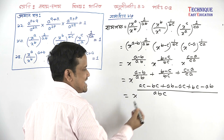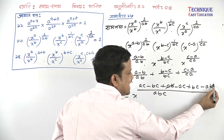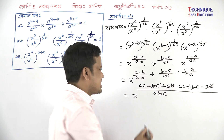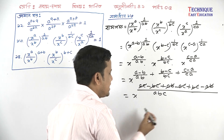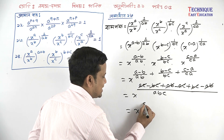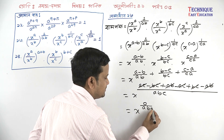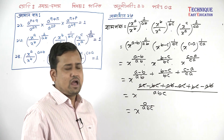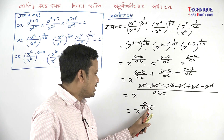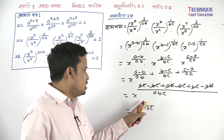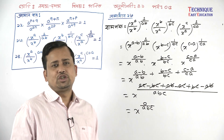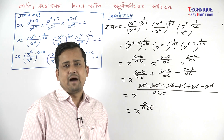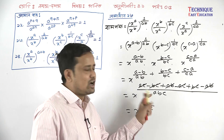Look — I am cancelling now. So ab and ab cancel. Here, bc and bc cancel. Here, bc and bc cancel again. We are left with X to the power 0 divided by abc. So the power becomes 0 over abc, which is automatically 0. So X to the power 0.